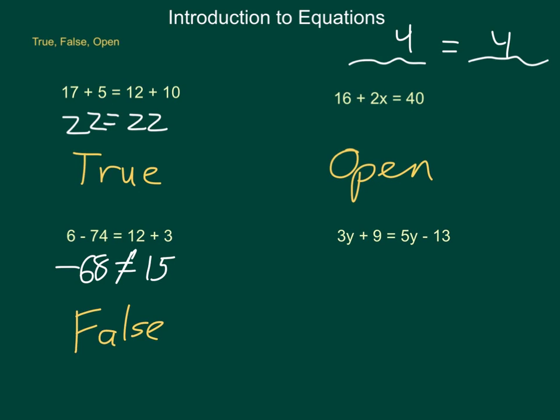Last, we look at 3y plus 9 equals 5y minus 13. Again, we do have the presence of variables in this equation. So once again, we have open status for this equation. True numerical equation: both sides are equal to one another. False numerical equation: both expressions are not equal. Or open: any algebraic equation that contains variables.